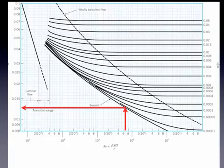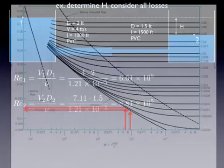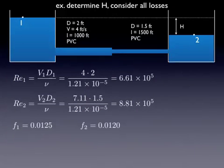So for the 6.6, we read up and over, and that gives us an F of around, let's see, 0.0125. And then from 8.8, we read across, and that's 0.012. Okay, so an F of 0.0125 and 0.012. Now we've got everything we need to solve. We just plug it all in.